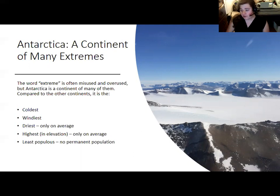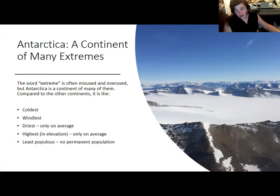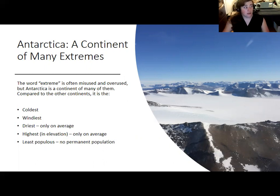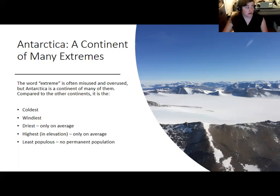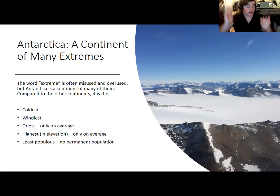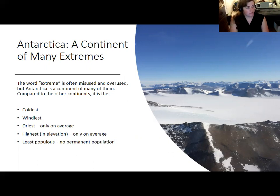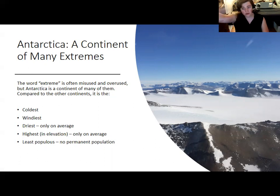Antarctica is also, on average, the highest continent. Even though Mount Everest is the highest point on Earth, Asia has vast lowlands — the Ganges Delta, coastal China — that reduce its average elevation. Antarctica, in contrast, is almost entirely covered by a large glacier. Treating the glacier height as elevation, Antarctica is a gigantic dome-shaped glacier — really two separate glaciers — making it uniformly and exceptionally high.